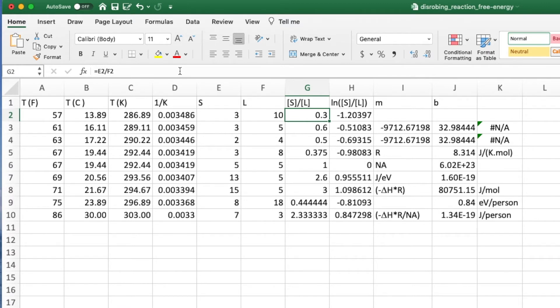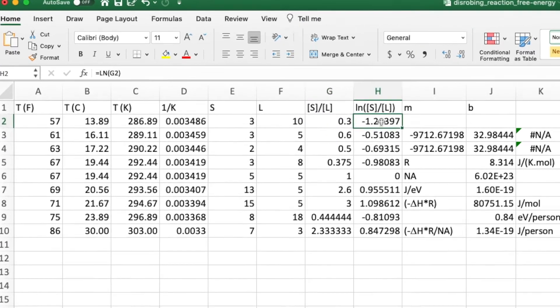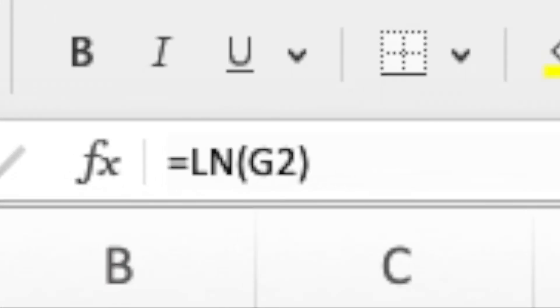After you have entered the data, create a column and compute the log of K. That's done in column H here. Selecting H2 shows the conversion.